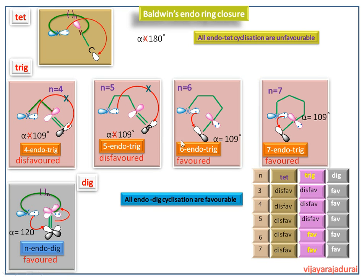This is the summary of the endo ring closure rule for the dig-hybridized molecule. In the next video, we discuss problems based on endo and exo ring closure rules, which are given in the CSIR Chemical Science question paper. Thank you.